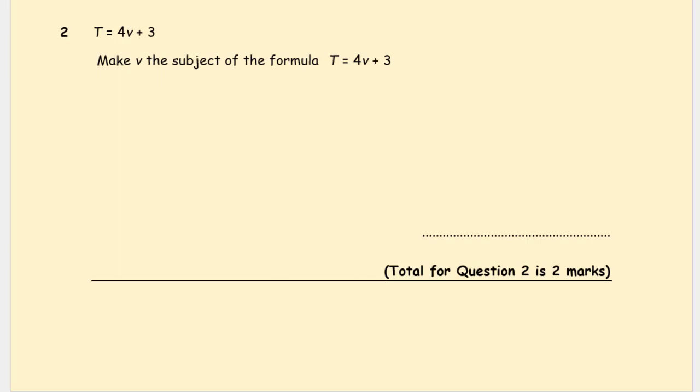Question 2, similar question. So we're going to subtract 3 from both sides. t minus 3 is equal to 4v. Divide by 4 both sides: (t minus 3) over 4 is equal to v. Now your final answer on the dotted line: v = (t minus 3) over 4.